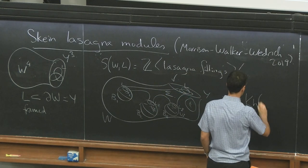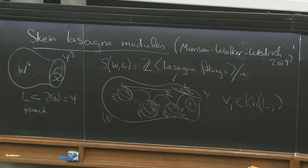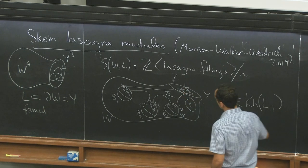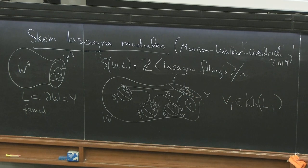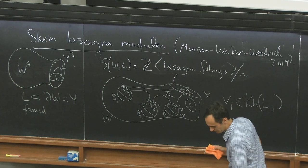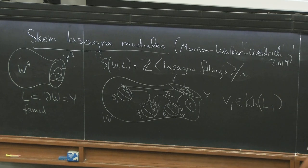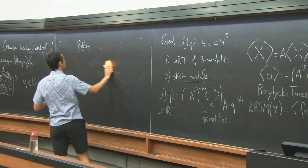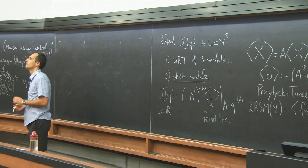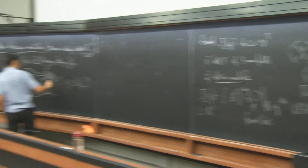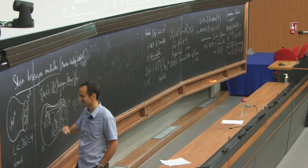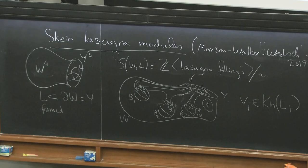So, VI are elements in the Khovanov homology of Li. Right. So, basically, instead of links, now we have these surfaces. Okay, yes. I'll get to that at the end. Yes. So, it should be in the chain complex, but we don't know how to do that at the moment. So, it's only an approximation to the truth for now.